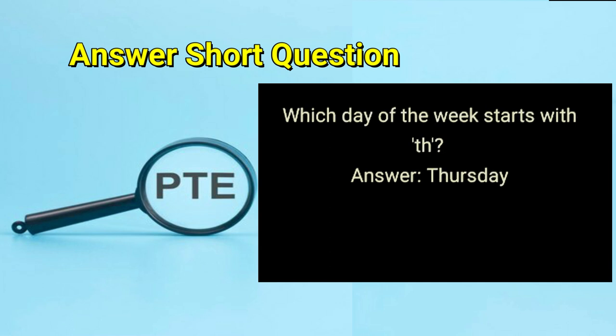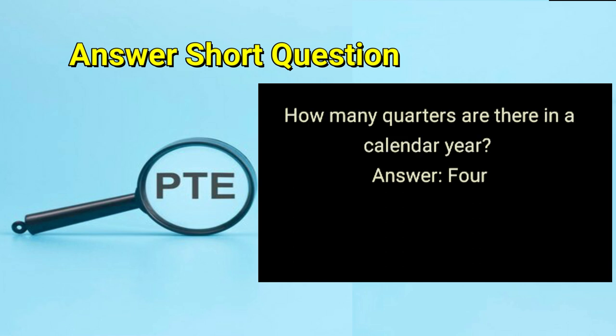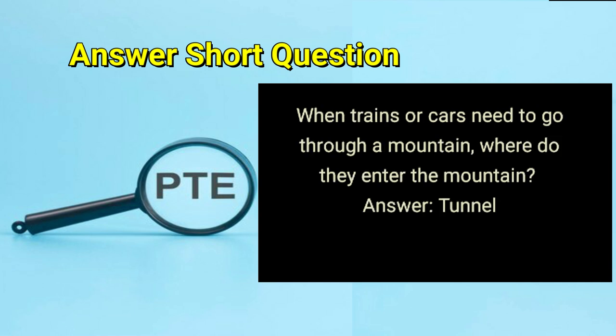Which day of the week starts with 'th'? Answer: Thursday. How many quarters are there in a calendar year? Answer: four. When trains or cars need to go through a mountain, where do they enter the mountain? Answer: tunnel.